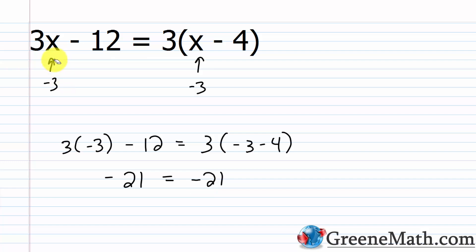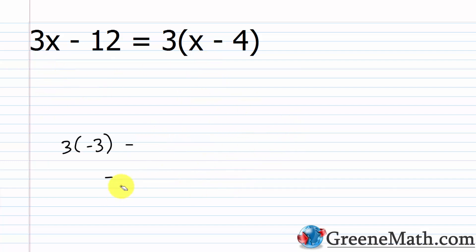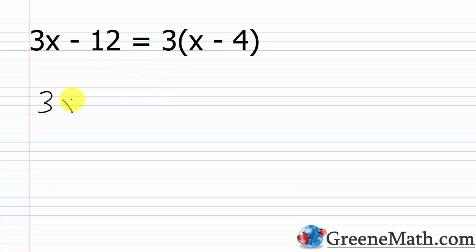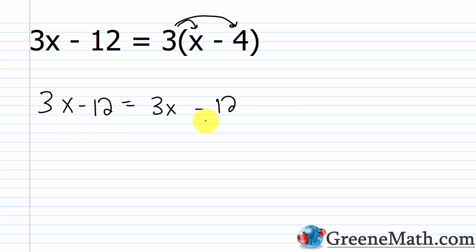The trick to this identity is that the left and right sides are the exact same thing — just in different forms. The left side is simply a simplified version of the right. If I use the distributive property on the right: 3 times x is 3x, and then minus 3 times 4 is 12. So I have the exact same expression on both sides. Whatever I plug in, I'm doing the exact same operations, so the left and right will always be equal.